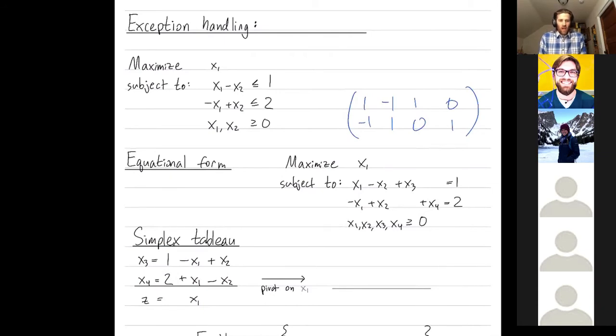Now we want to try to improve our optimization function. So we want to try to increase x1. So we look at our two equations. Can I increase x1 in these equations? In the equation for x4, yeah, I can increase x1 as much as I want and x4 will still remain non-negative. In the first equation, I can only increase x1 up to 1 because otherwise if x1 got larger, x3 would be negative, contradicting my non-negativity constraints. So I'm going to pivot on x1. And my limiting equation is the first one, the equation for x3. So I rewrite that for x1.